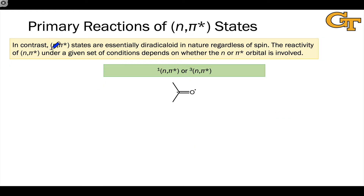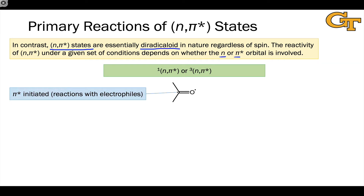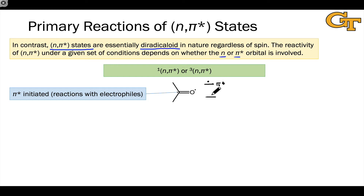nπ* states are quite different — they are essentially diradicaloid in nature regardless of whether they are singlet or triplet. The key to understanding an nπ* state is to appreciate which orbital is involved: the n orbital or the π* orbital. Looking at the orbital occupation diagram, we have one electron in the π* orbital at higher energy than the one electron in the n orbital. The π* orbital's electron is nucleophilic, as we've discussed previously.